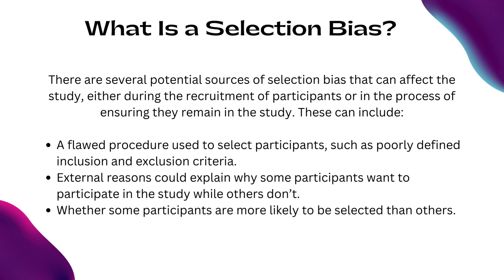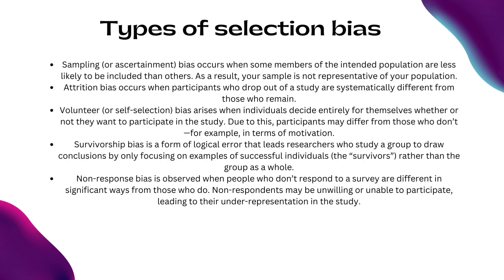Selection bias is a form of systematic error. Systematic differences between participants and non-participants, or between treatment and control groups, can limit your ability to compare the groups and arrive at unbiased conclusions. There are several potential sources of selection bias, either during the recruitment of participants or in the process of ensuring they remain in the study. These can include flawed procedures used to select participants, such as poorly defined inclusion and exclusion criteria, or external reasons that could explain why some participants want to participate while others don't, and whether some participants are more likely to be selected than others.